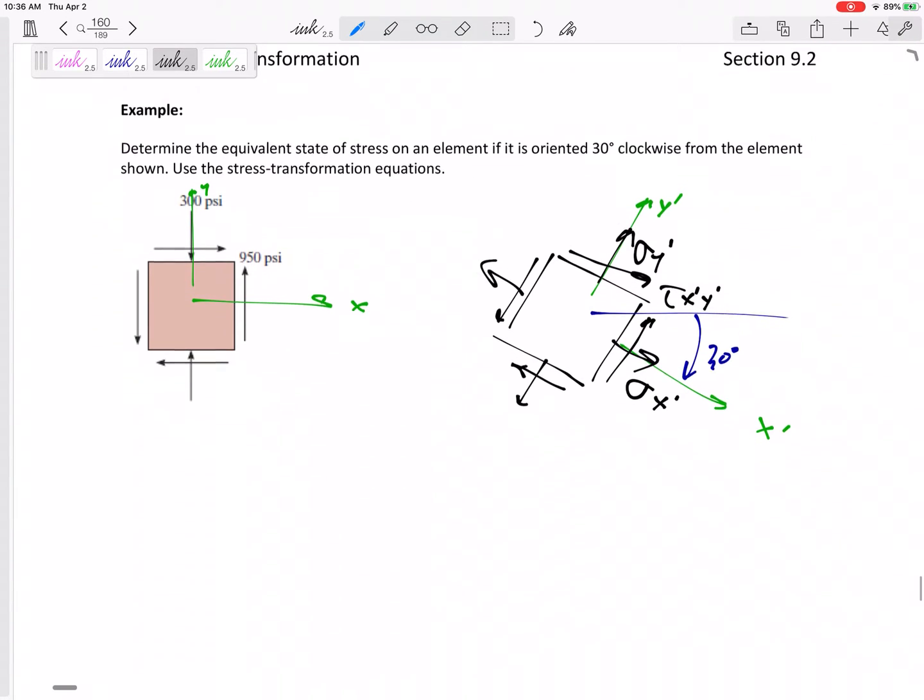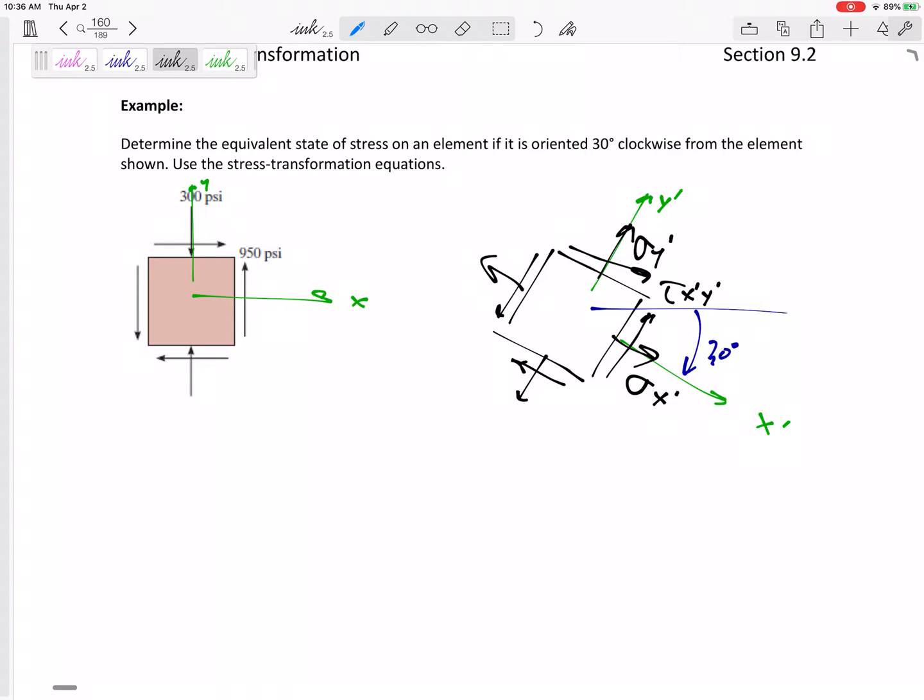All right, so first of all, I really like to restate what we are given. What is the sigma x for this figure? What is the sigma y for this figure? What is the shear stress tau xy for this figure? Well, sigma x would be what is coming out of that face. Nothing. It is zero. So everywhere I see a sigma x, I'm going to plug in a zero.